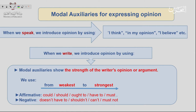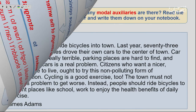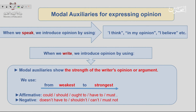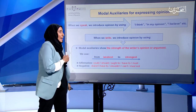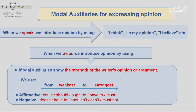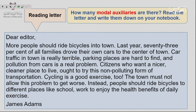When written, in the affirmative we usually use: could, should, ought to, have to, must. In the negative: doesn't have to, shouldn't, can't, must not. The difference between the two is that saying 'I think' is softer, whereas using 'could' or 'should' is stronger — it puts an emphasis on the opinion.